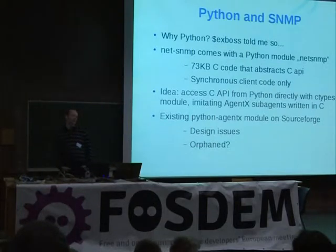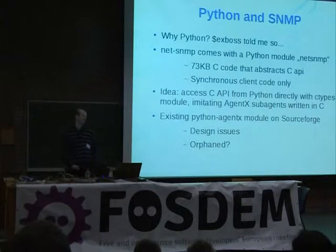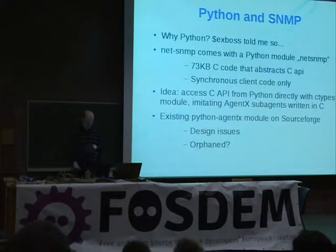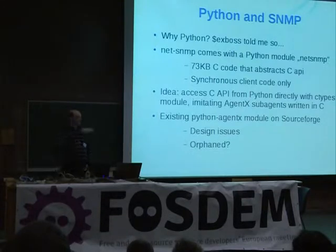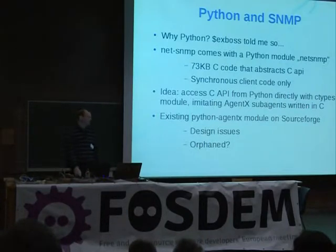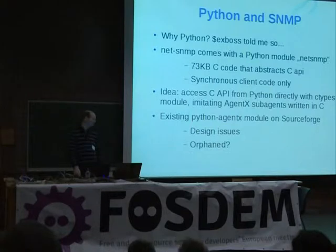Net-SNMP comes with a Python module, also called Net-SNMP. It's quite a large pile of C code that abstracts the whole C API into an object-oriented approach. But it's client code only. So if you want to do an agent, you're stuck. The idea is to take the C API and access it from Python with ctypes, implementing AgentX sub-agents. I'm not the first one to have had that idea — there's a module on SourceForge called Python Agent X.